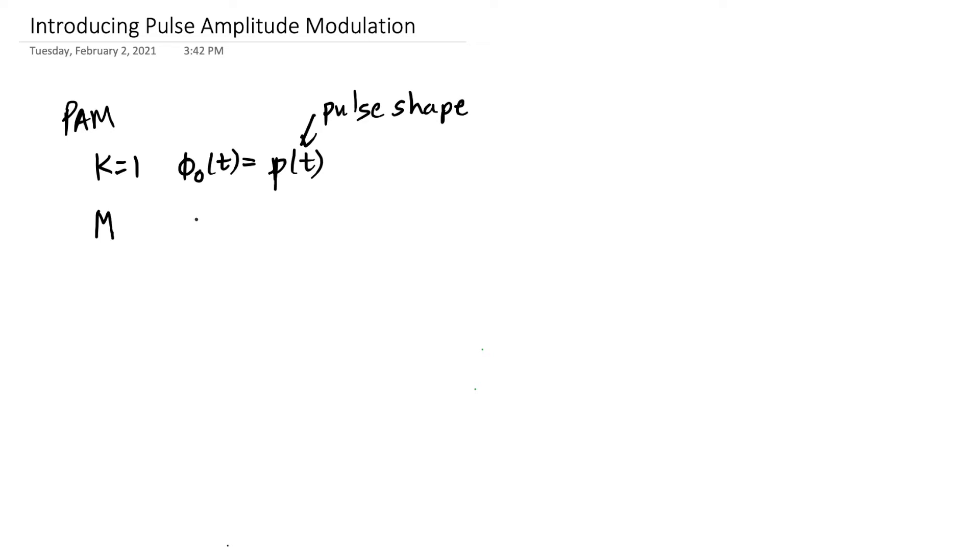For binary, for binary bipolar PAM, we pick two opposite amplitudes to use for our two symbols. So we have S0 of T becomes A times P of T, and S1 of T becomes negative A times P of T.